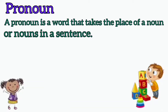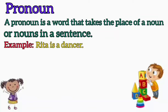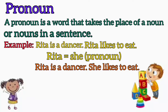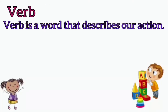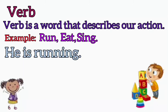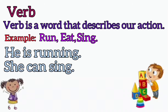Next we have pronoun. A pronoun is a word that takes the place of a noun or nouns in a sentence. For example, 'Rita is a dancer. Rita likes to eat.' Instead of Rita we can use 'she', which is a pronoun. So the sentence becomes: 'Rita is a dancer. She likes to eat.' Next we have verb. A verb is a word that describes our action. For example: run, eat, sing. 'He is running. She can sing.' Here running and sing are verbs.